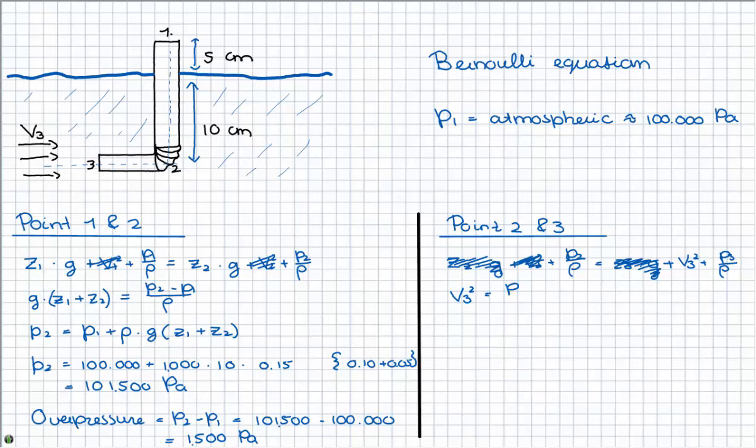We write the equation: v3 squared is the pressure at point 2 minus the pressure at point 3 divided by the density. Now you have to realize that point 3 is 10 centimeters underneath the water line, and therefore 1000 pascals is added up to the atmospheric pressure, as you can see as we fill in the numbers.